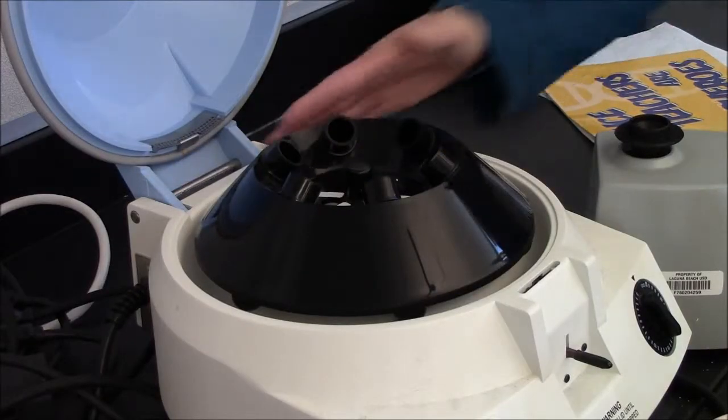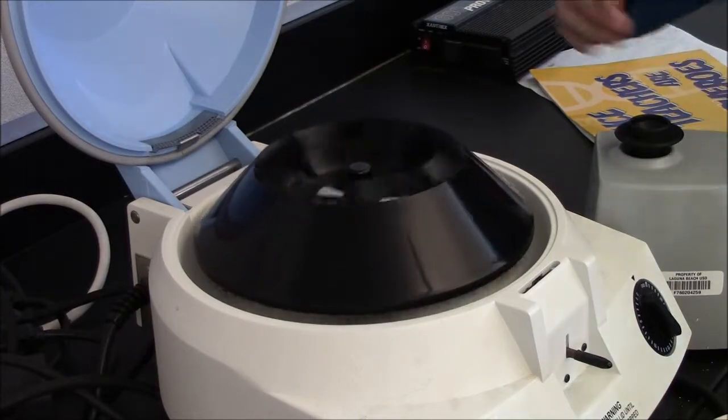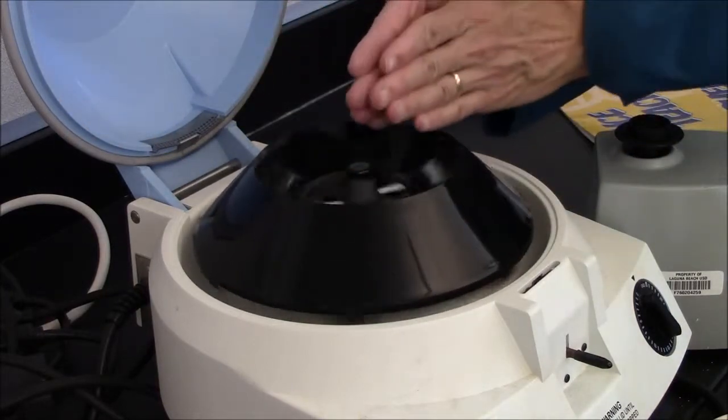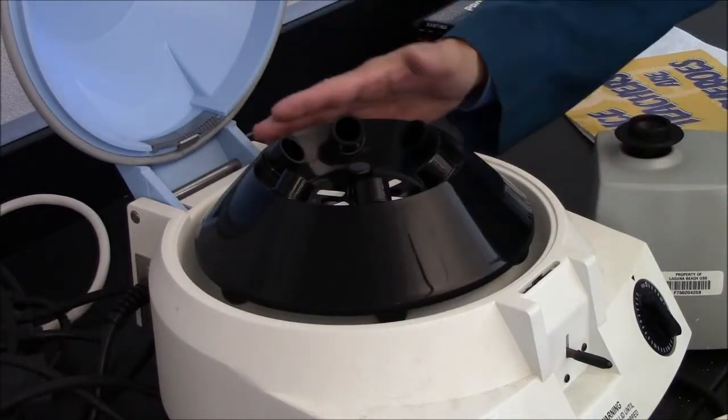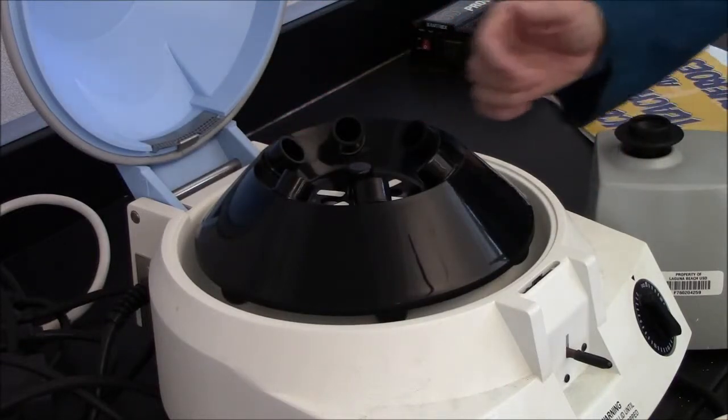The centrifuge will spin at about 3,000 RPMs. As it does so, it's creating a centrifugal force pushing material away from the center. This is what allows it to separate materials.